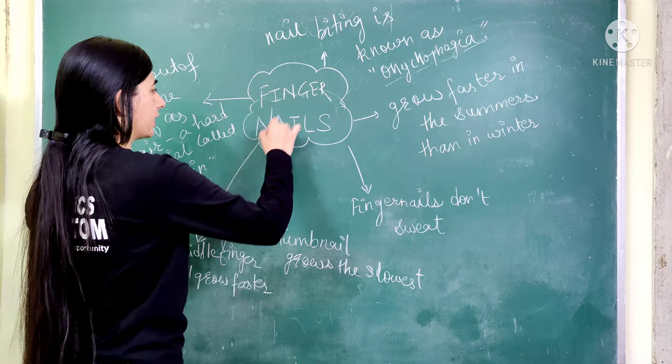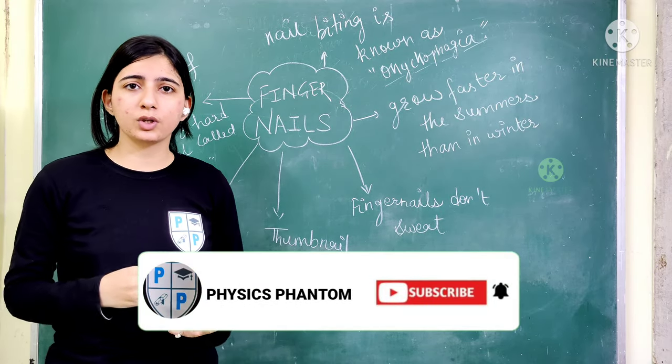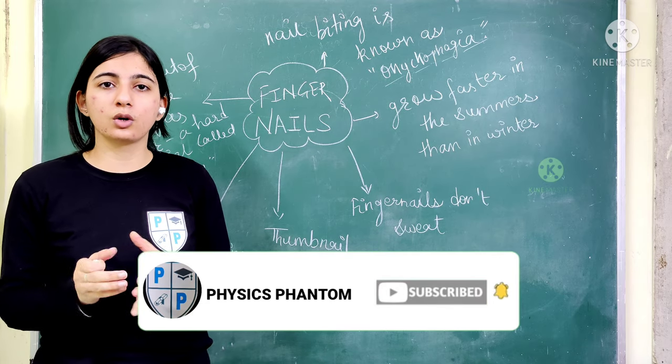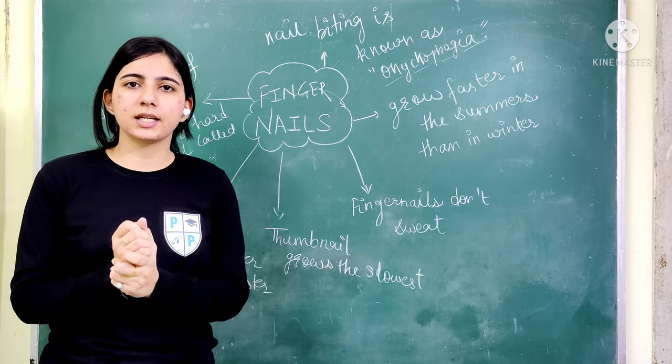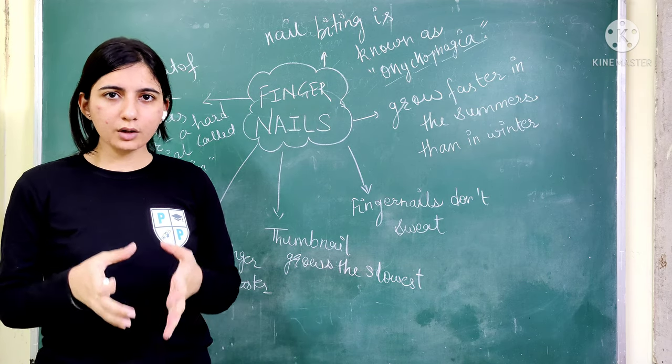The first thing is fingernails. The most important thing is that our foot nails are slow to grow. You can say that fingernails grow faster compared to toenails.